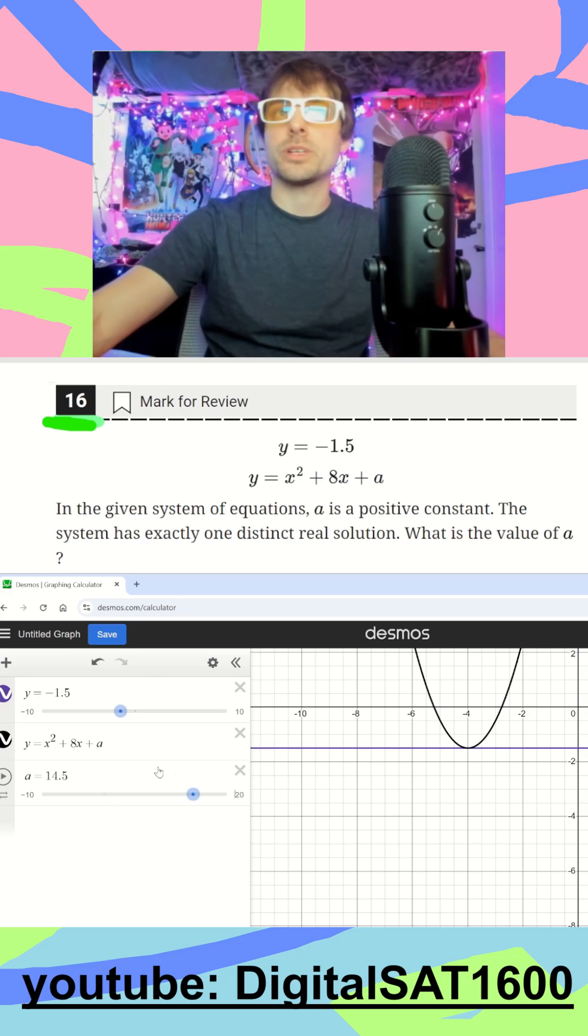So one solution would be a is equal to 14.5. No solutions would be anything over 14.5, and then two solutions when we intersect the line twice would be under 14.5.